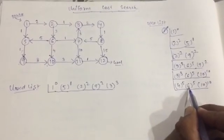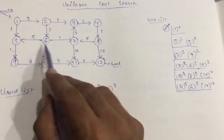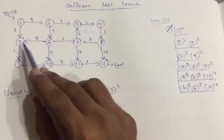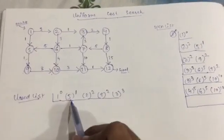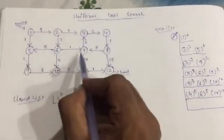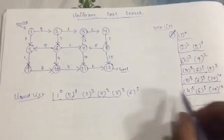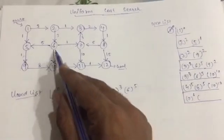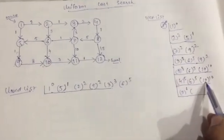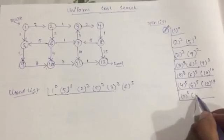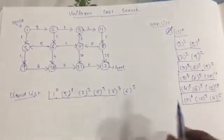Since node 6 came before in the list, start from node 6. From node 6 you can move to node 5, node 10, and node 7. You don't have to write node 5 because it's already in the closed list. So just node 7 and node 10. Include node 6 in the closed list. From node 6 to node 10, its value would become 9, but the previous value of node 10 was 10, so write the minimum value, which is 9.